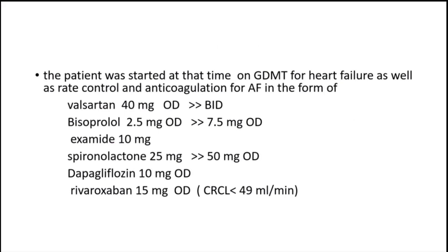The patient was started on guideline-directed medical therapy for heart failure as well as rate control and anticoagulation for atrial fibrillation: valsartan 10–40 mg once daily titrated to 40 mg BID, bisoprolol 2.5 mg once daily titrated to 7.5 mg, ezetimibe 10 mg once daily, spironolactone 25 mg titrated to 50 mg once daily, empagliflozin 10 mg once daily, and rivaroxaban 15 mg once daily given the creatinine clearance was less than 49 mL/min.